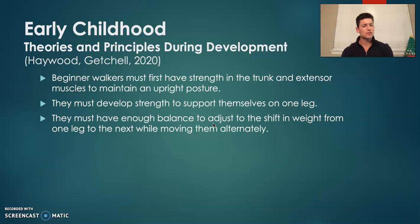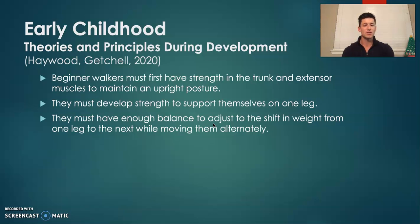Theories and principles during this development. Beginner walkers first need to have enough strength to maintain an upright posture. This means the muscles in their core, in their trunk, in their extensor muscles need to strengthen. This strength also needs to support them in a unilateral or one-leg stance, and they must have enough balance to adjust to the different weight shifts when alternating from one leg to the next in each gait cycle.